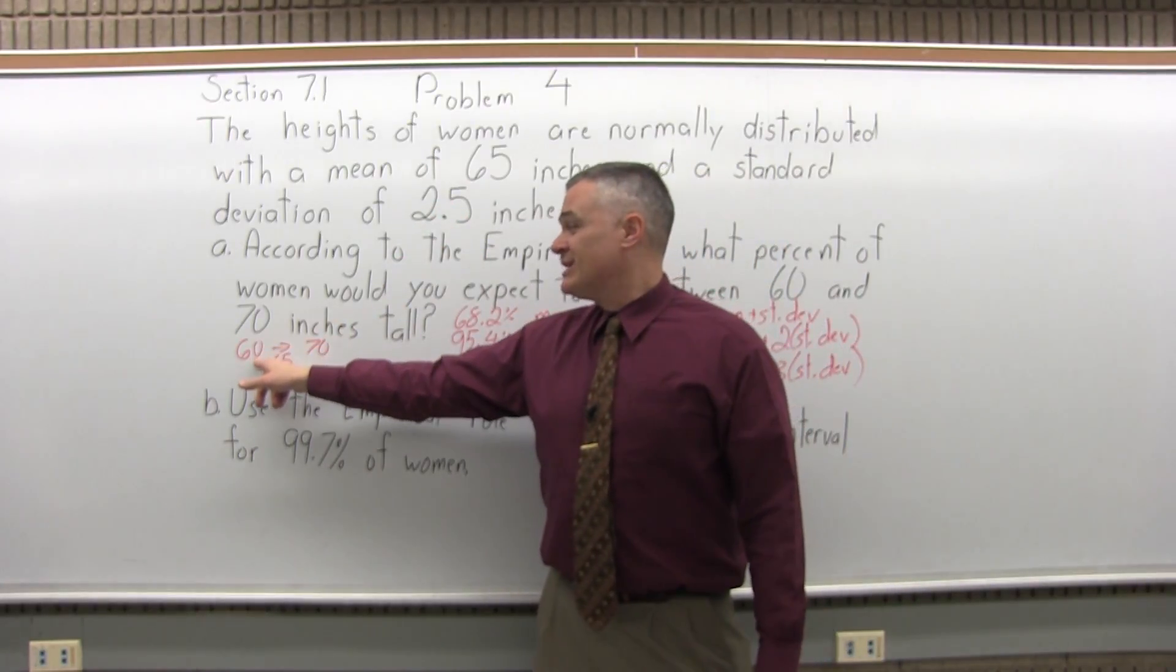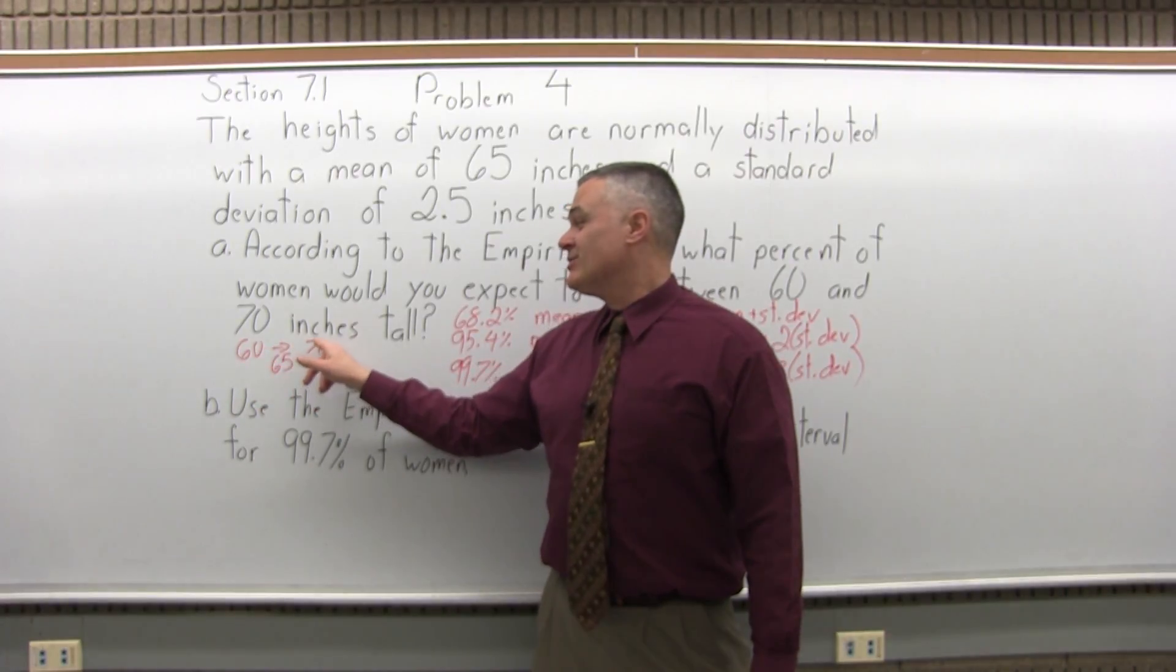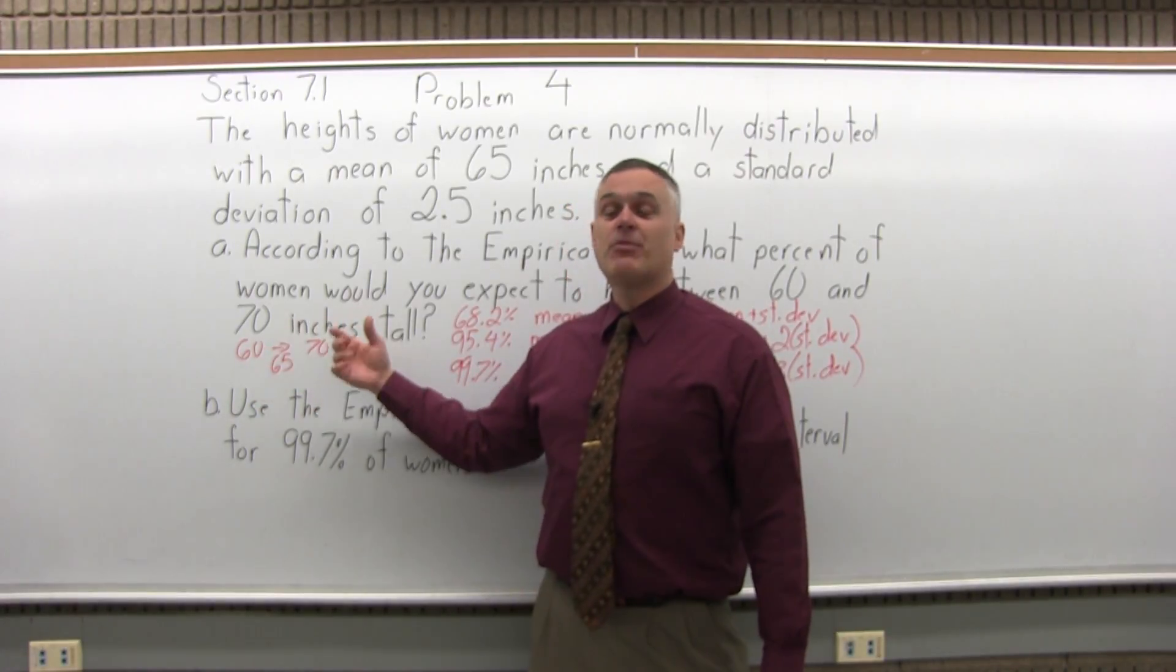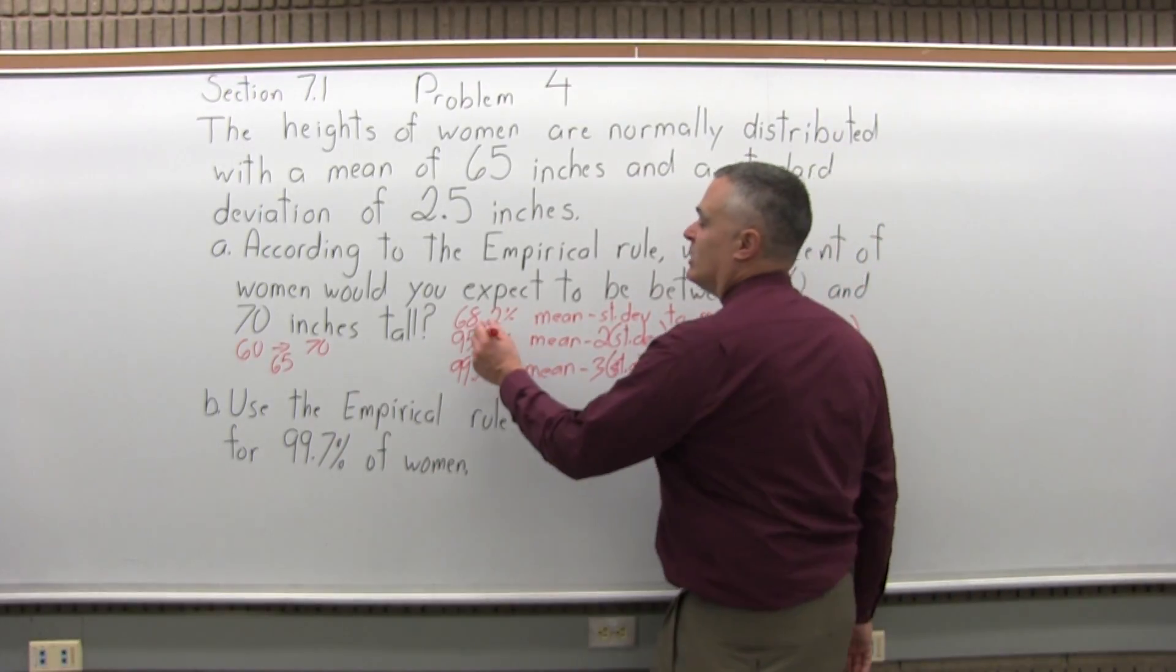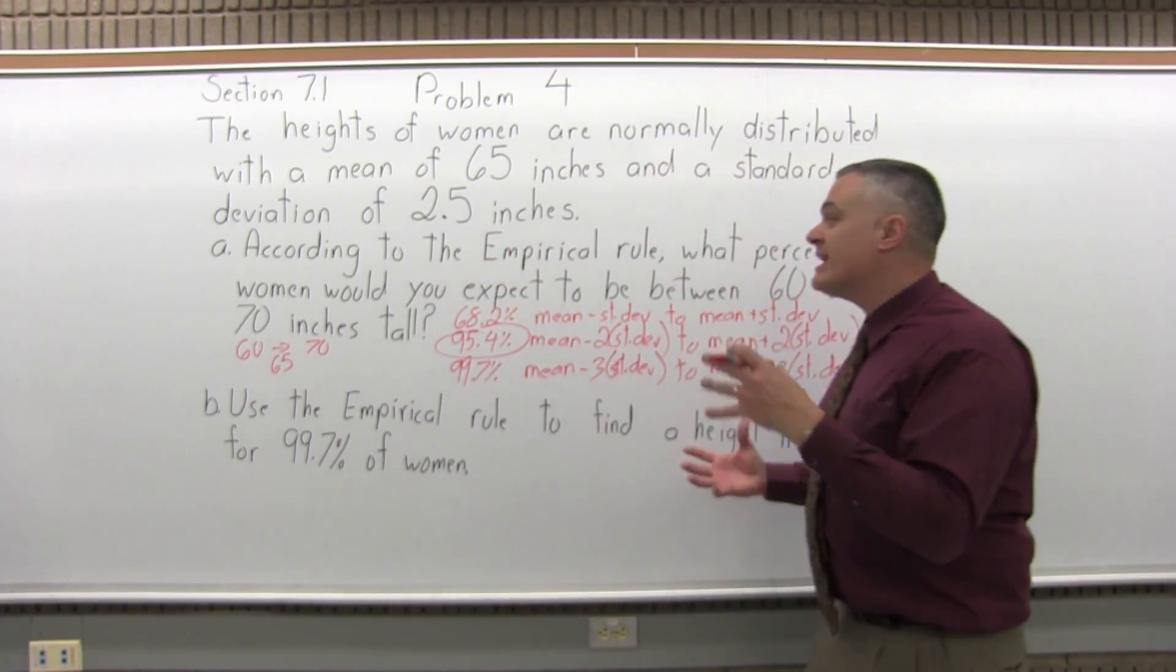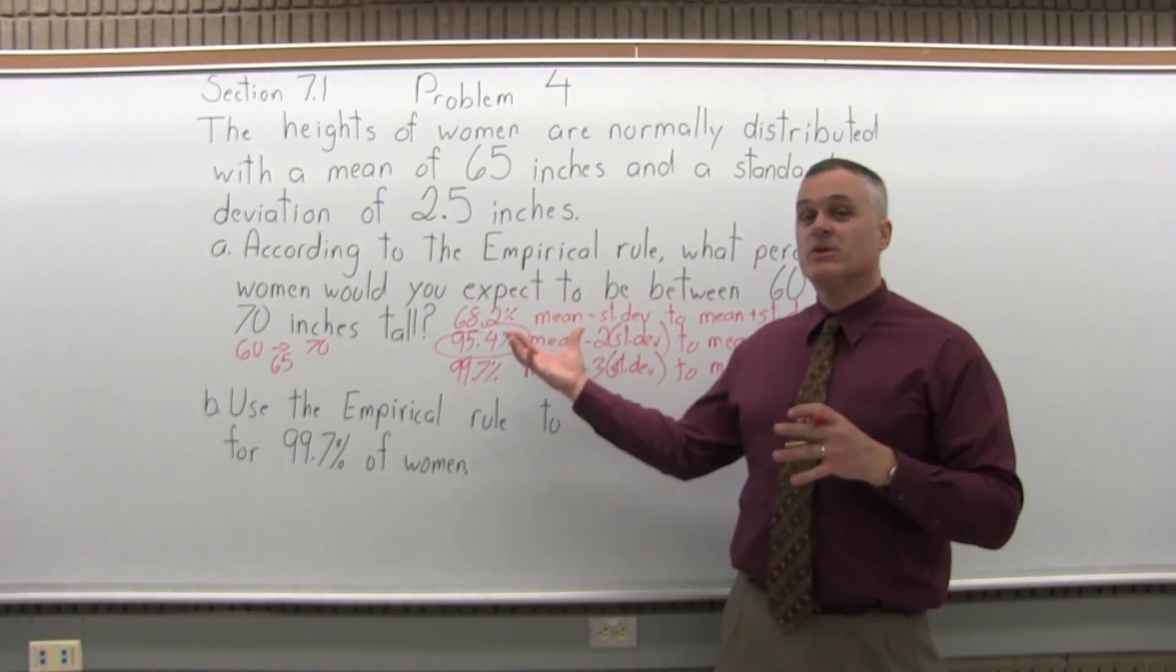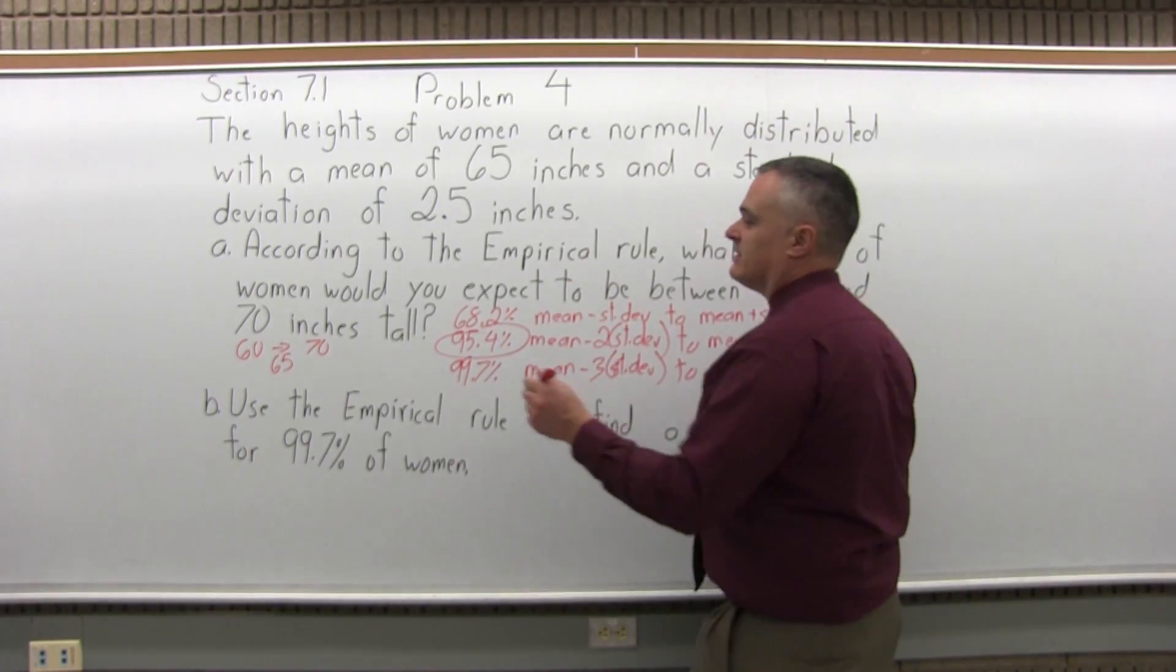Two standard deviations less than the mean is the lower end of the interval. Two standard deviations bigger than the mean is the upper end of the interval. That's the 95.4%. So the answer, according to the empirical rule, what percent of women would you expect to be between 60 and 70 inches tall is 95.4%.